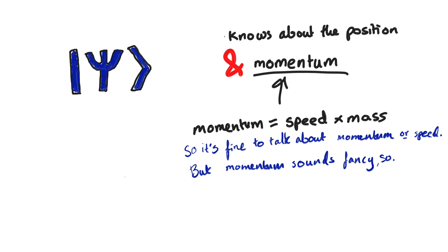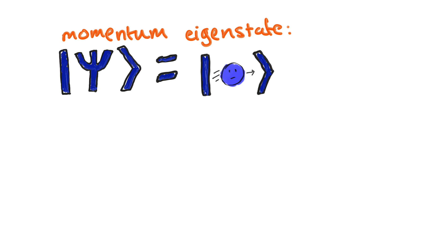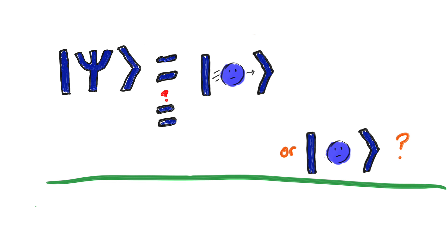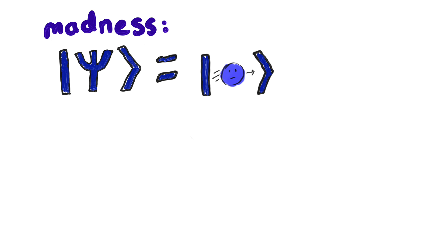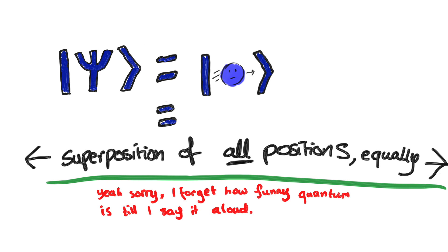There is a way to convert the wave function from the position basis to the momentum one. When you do it, you could find your particle is in a superposition of several speeds. Here's the question we'll focus on: if the particle is going at one speed — so the wave function is a momentum eigenstate — then where is it? How do we write that wave function in the position basis? Even at a particular time, a momentum eigenstate is a superposition of many positions — in fact, all of them, equally.